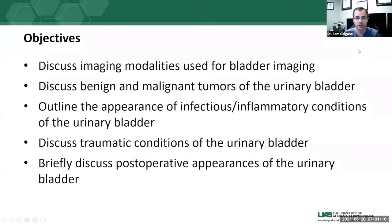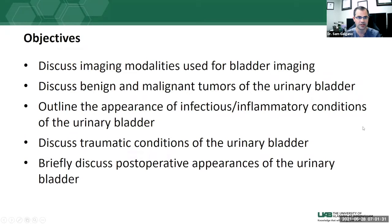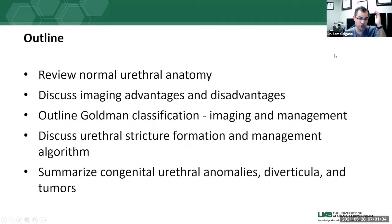Starting with bladder imaging, we'll discuss the imaging modalities we use to image the bladder, benign and malignant tumors of the urinary bladder, common infectious or inflammatory conditions, bladder trauma, and the postoperative appearance following common bladder surgeries. After that, we'll move on to the urethra — normal urethral anatomy, imaging advantages and disadvantages, the Goldman classification for traumatic urethral injuries, urethral stricture formation and management, and a variety of other urethral pathology.